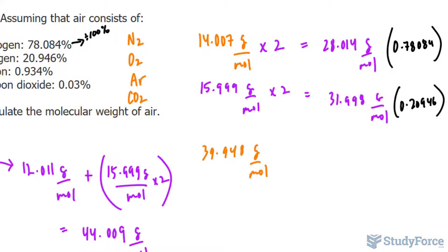For argon, dividing that by 100% gives 0.00934. And this one, after dividing that by 100%, is 0.0003.